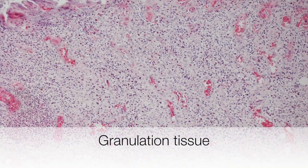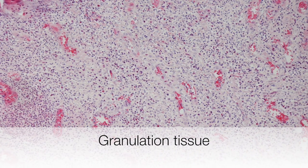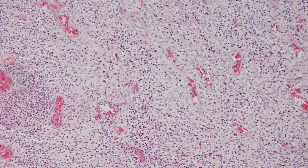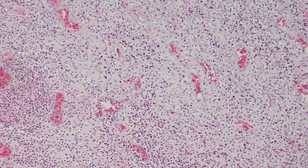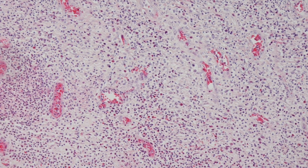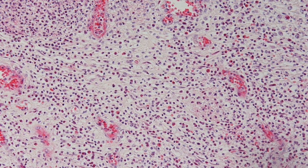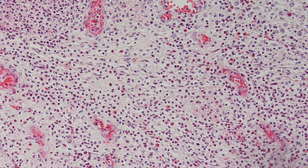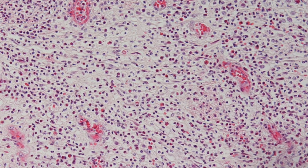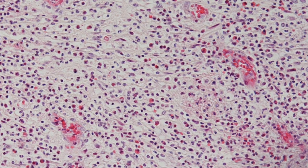This is a low power view of granulation tissue and you can see how vascular it is and that the capillaries are arranged parallel to each other. On a higher power you can see the cells in the inflammatory exudate that are predominantly neutrophil polymorphs.